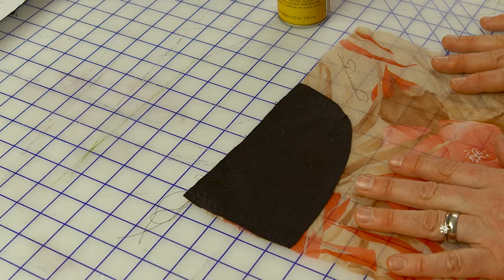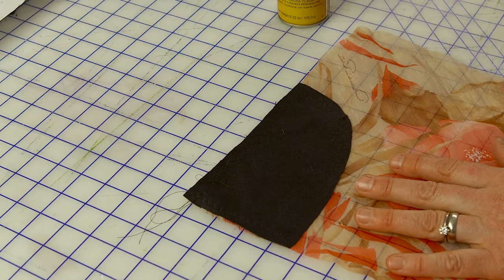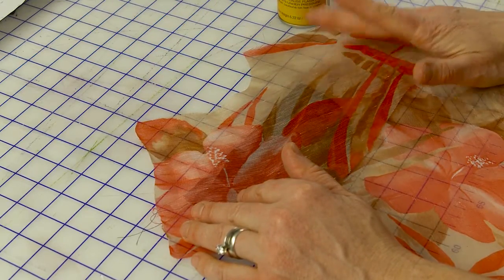I've got my knit facings on my pocket bag pieces. Now I'm going to sew my pocket facings onto the front legs of my ponti jean.